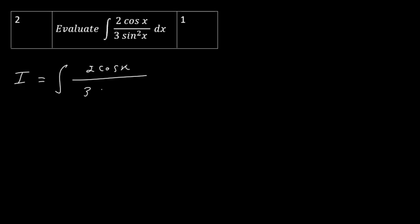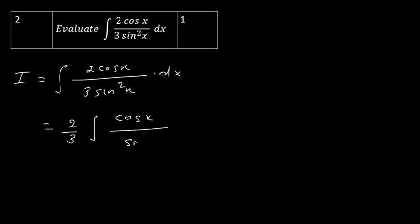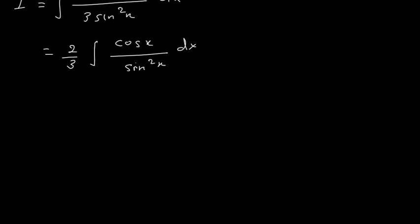The second question involves ∫ (2cos(x)) / (3 sin²x) dx. There are two ways to solve this problem. The first way is to substitute sin(x) = t. You take 2/3 (constant) out, leaving ∫ cos(x)/sin²(x) dx. The derivative of sin(x) is cos(x), so let sin(x) = t, meaning cos(x) dx = dt.